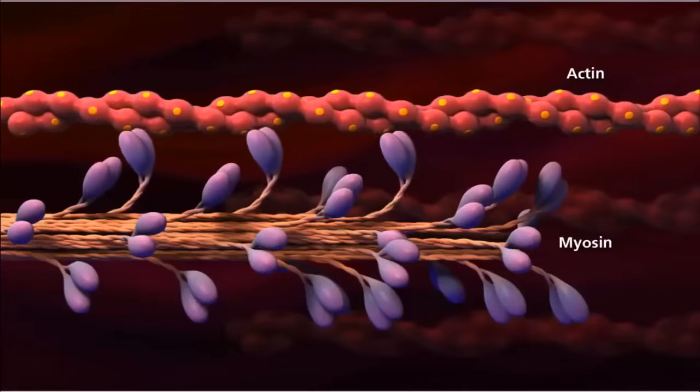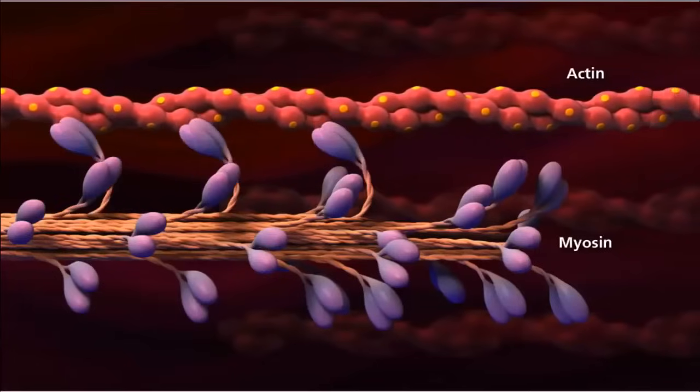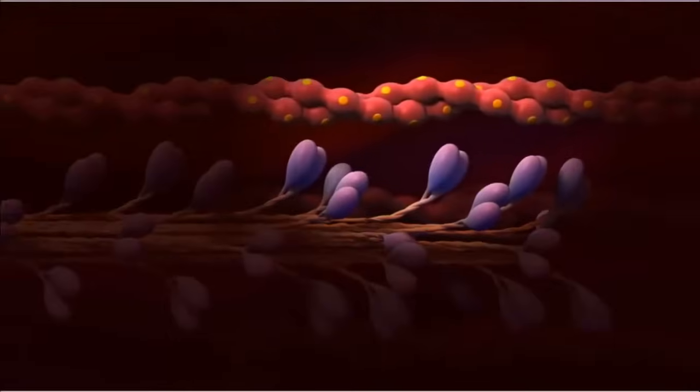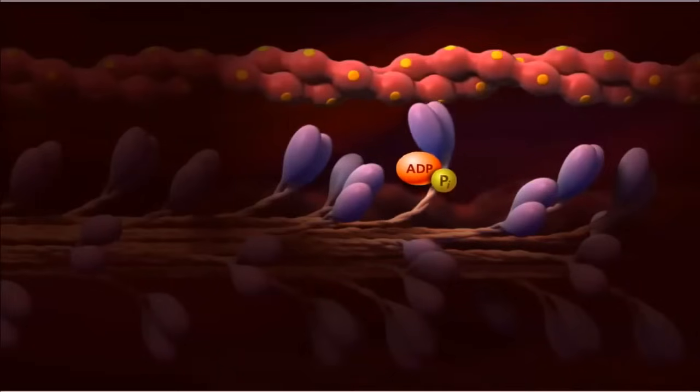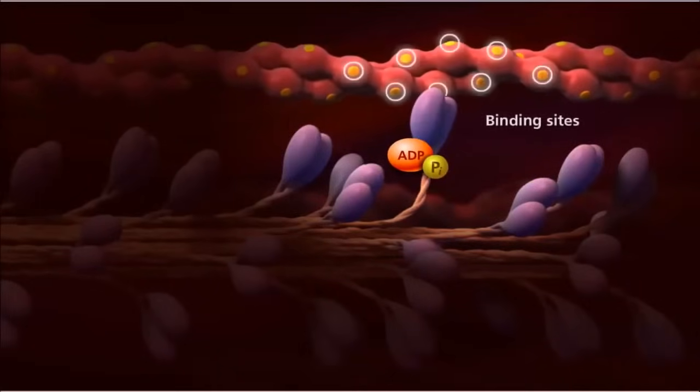In this model, the sarcomeres shorten without the thick or thin filaments changing in length. A contraction begins when a bound ATP is hydrolyzed to ADP and inorganic phosphate. This causes the myosin head to extend and attach to a binding site on actin, forming a cross-bridge.